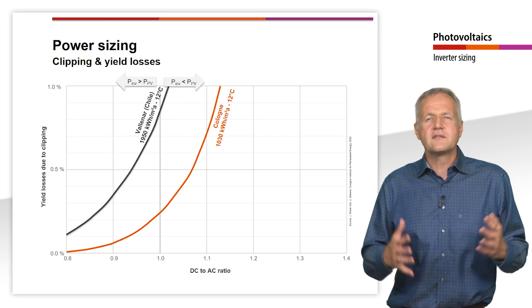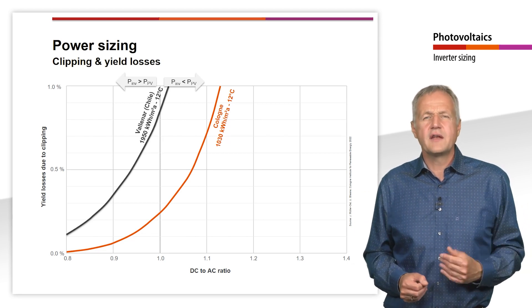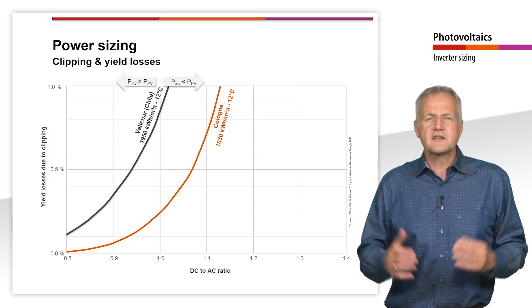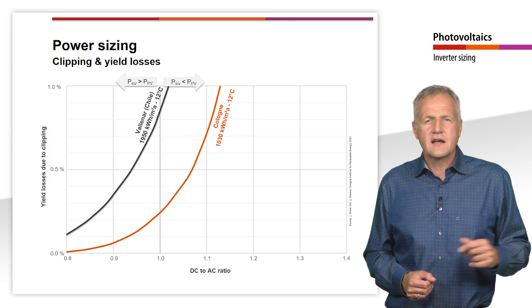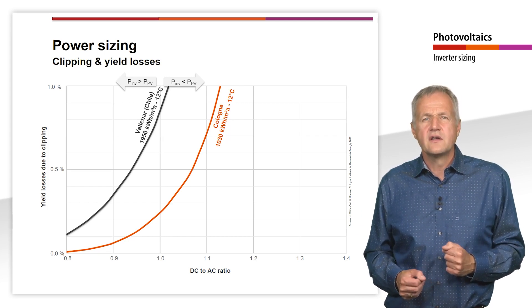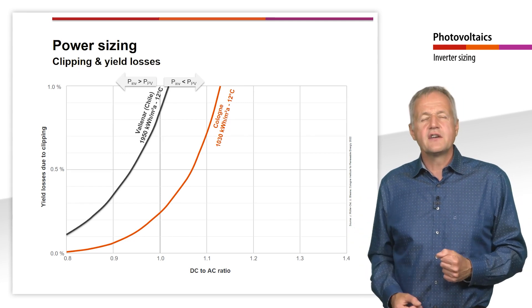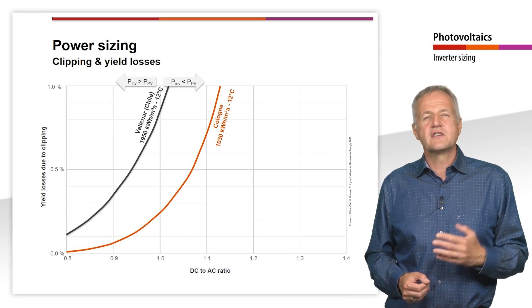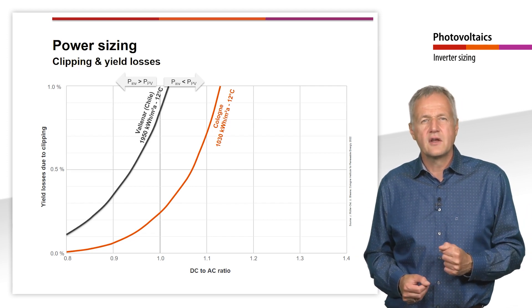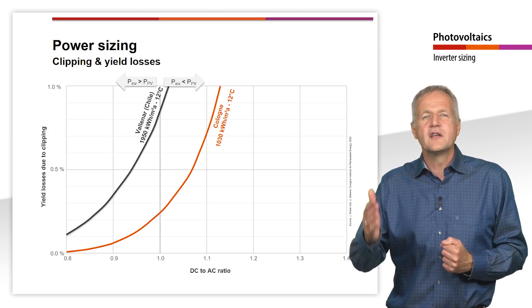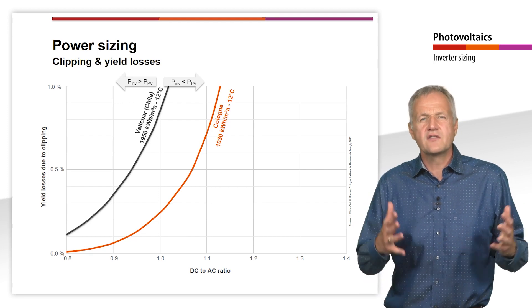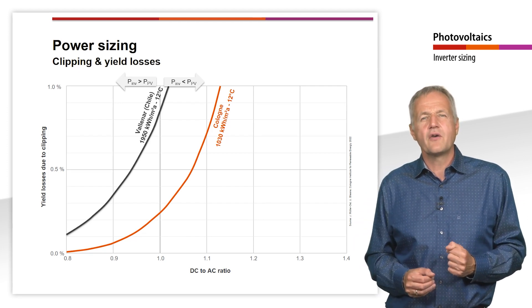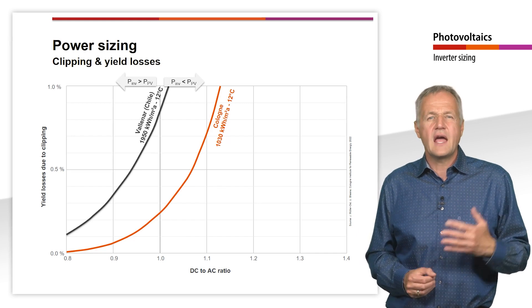Shown here are the yield losses of a system in Vallenach, which is located in the Atacama desert in Chile. The annual irradiation here is 1950 kWh per square meter and the average temperature is 12 degrees Celsius. For comparison, in Cologne, the annual irradiation is 1030 kWh per square meter with a similar average temperature.